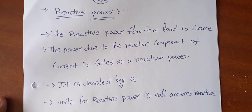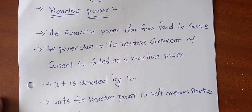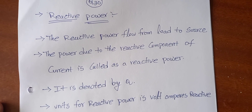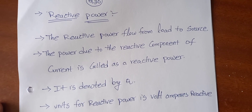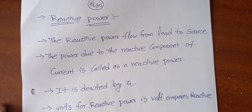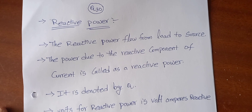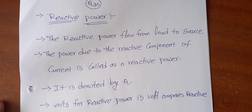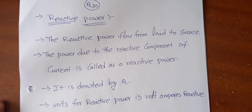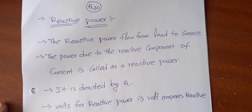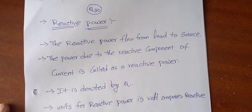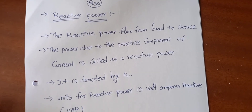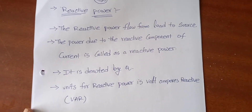Due to inductive reactance or capacitive reactance, the power will be generated at the load end, and that power flows from load to source. Because whenever the source power is very less compared to the load end — because of reactive components — the current flows from load to source. That power is called reactive power.